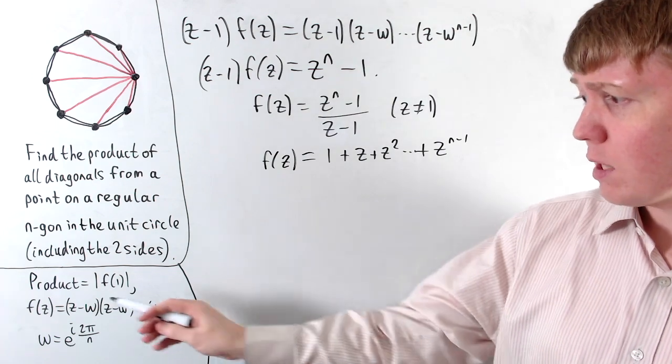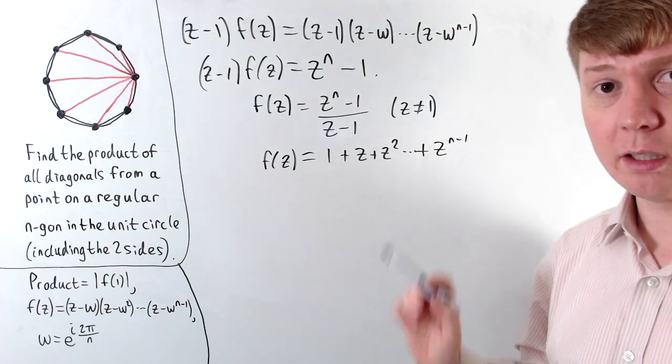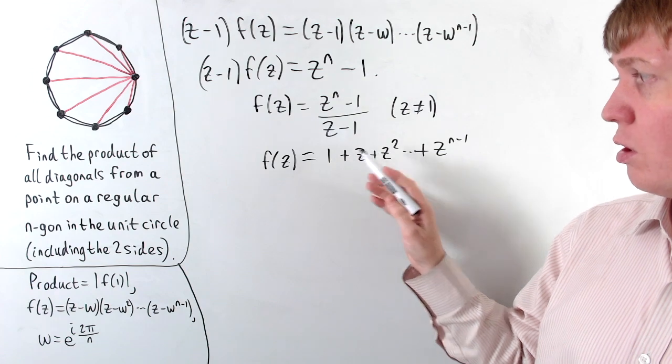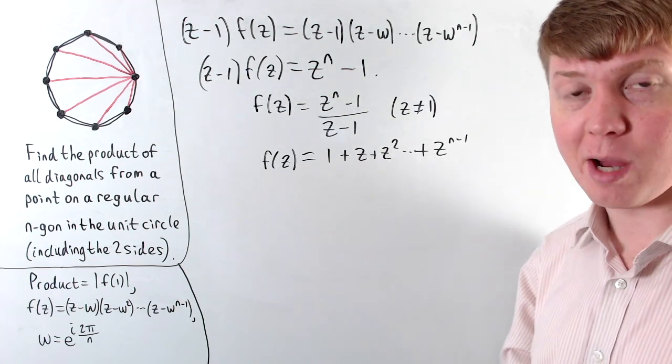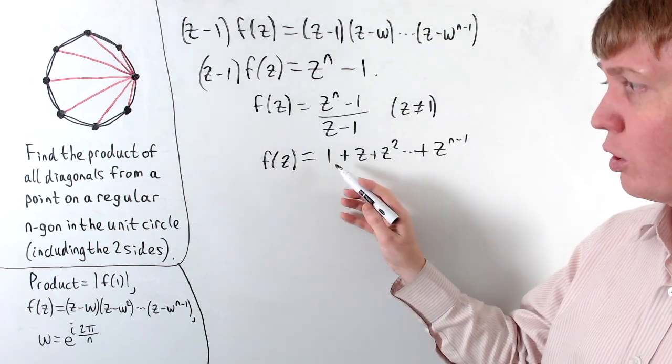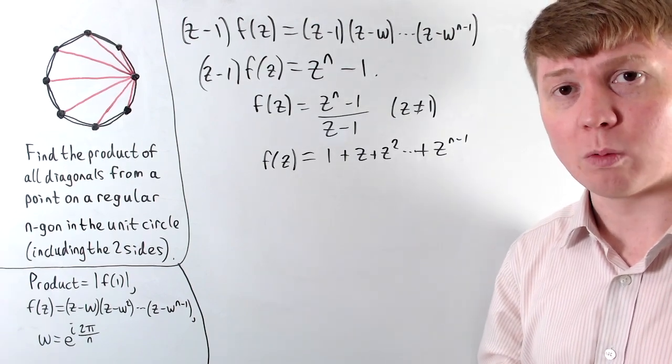But remember, f of z is just a polynomial. So this is telling us then, if this is true for every single value of z, this means that the coefficient of our constant term, of our z term, our z squared term, all the way up to our z to the n minus 1 term, these coefficients must all be 1. So actually our function f of z must take this form for all values of z, including 1.